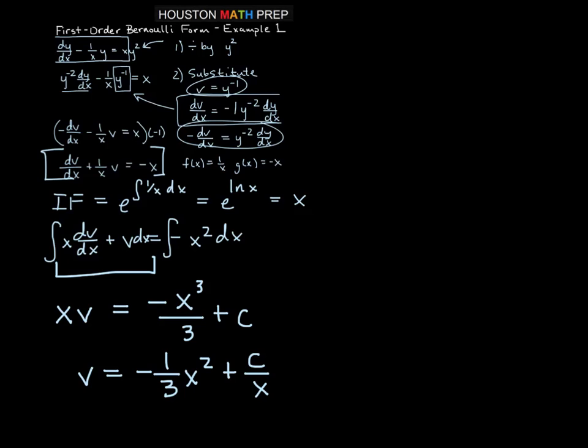And then we just want to go ahead and convert back to our original variable y. So remember, our substitution was v equals y to minus 1. In other words, v is equal to 1 over y.